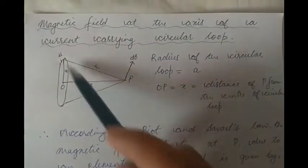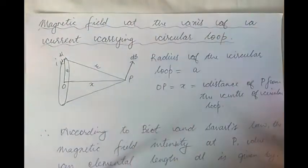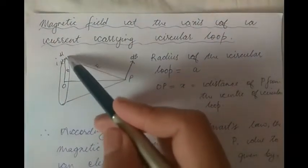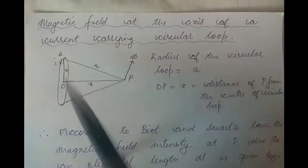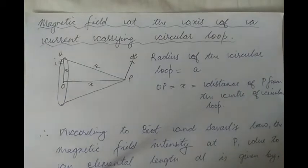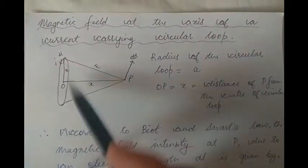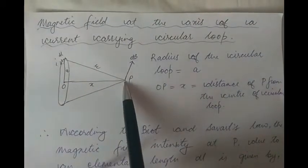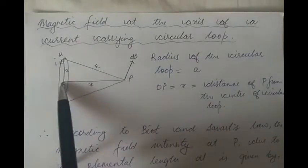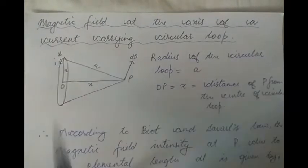This is a circular loop. Current is flowing in this direction — coming out of the plane of the paper in this case. Due to current flowing in this circular loop, there will be a magnetic field generated, and we want to find the magnetic field intensity at point P, which lies on the axis of the current carrying circular loop.